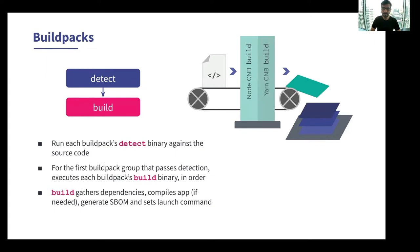For instance, while a Java Buildpack may look for the presence of .java files, a Node Buildpack can look for the presence of package-lock.json. At build time, these Buildpacks may download dependencies as needed, compile from source, generate build or runtime bills of materials, or set start commands or entry points.